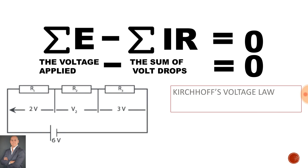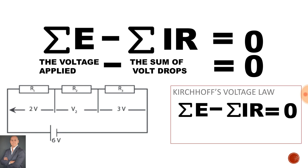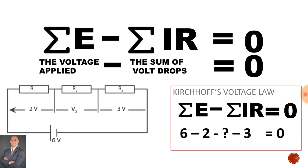Looking at these three resistors in series and the volt drop across each resistor, using Kirchhoff's voltage law: the applied voltage minus the sum of the volt drops — here we have an applied voltage of 6 volts minus the volt drops of 2, 1, and 3 — must be equal to zero.